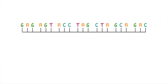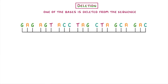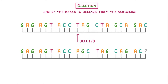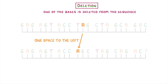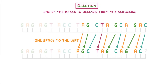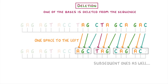A similar thing happens with deletion mutations, where one of the bases is deleted from the sequence. For example, if this T gets deleted, the A has now shifted one space to the left, and as a result all of the subsequent bases will also have shifted one space to the left. So as well as this codon being different, all of the subsequent ones will be as well.